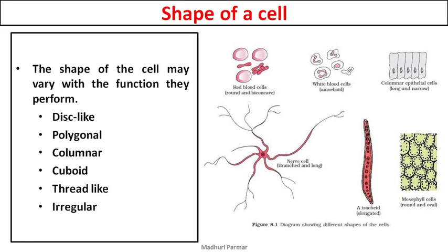That was about the size of a cell — we saw there is a huge variety in sizes. Now let us move on to the shape of a cell. The shape of a cell also has a lot of variety. It depends on the function they perform — what kind of task they are doing.